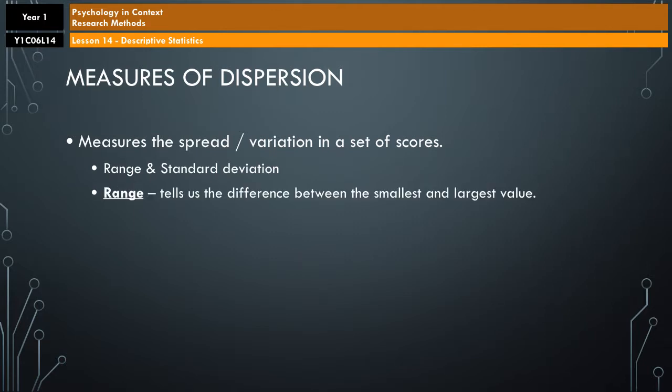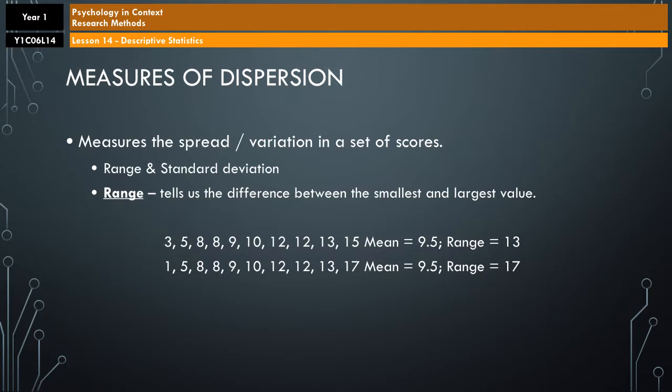So, measures of dispersion, they measure the spread or variation in a set of scores. The two that you're going to learn are the range and the standard deviation. We'll start off with the range. The range tells us the difference between the smallest and the largest value. So if you were to work it out, all you would do is take the highest value and subtract the lowest value and then add one. So, in the data set in front of us, you have 15 minus 3 gives you 12, and then you add one and the range is 13.